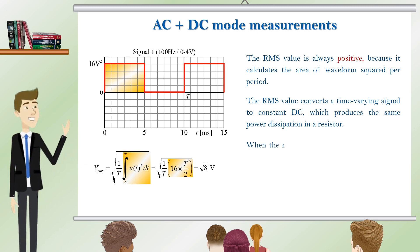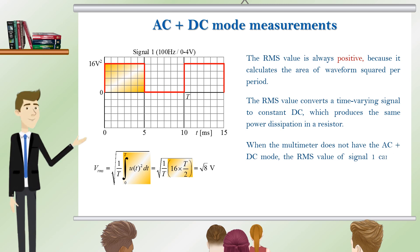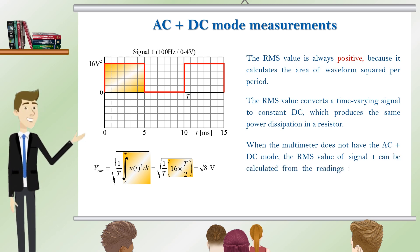When the multimeter does not have the AC and DC mode, the RMS value of signal 1 can be calculated from the readings in DC and AC modes according to the formula.